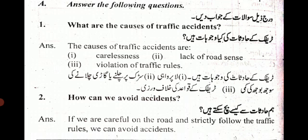First question is: what are the causes of traffic accidents? Traffic pe haadshaaat hotate hain. The answer is: the causes of traffic accidents are carelessness, lack of traffic sense, and violation of traffic rules. یعنی کہ traffic ke haadshaaat کن وجہ سے ہوتے ہیں — ایک تو لاپروہی، دوسرا سڑک پر چلنے یا گاڑی چلانے کی سوجھ بوجھ کی کمی، اور تیسرا traffic rules کی خلاف ورزی۔